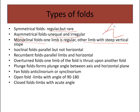A monoclinal fold will have one regular limb and one steep vertical limb. Isoclinal folds — 'iso' means same — are parallel but not horizontal. Recumbant folds are horizontal in shape. So isoclinal folds are parallel but not horizontal, while recumbant folds lie horizontally.